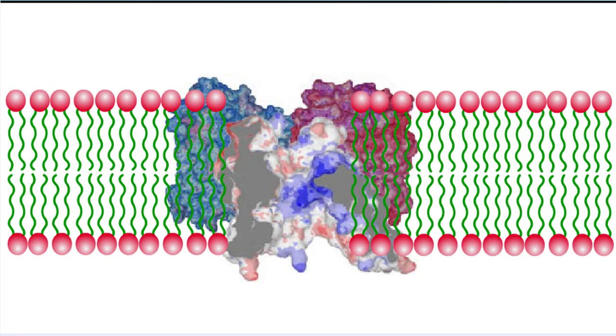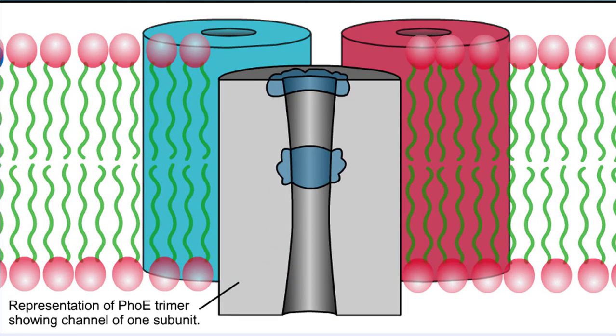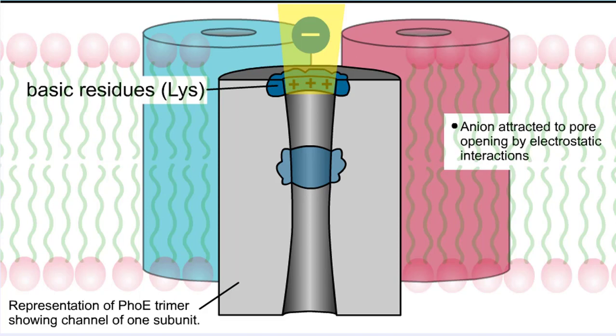Note the positively charged regions at the mouth of the pore and at the constriction site. This makes the pore specific for small anions.